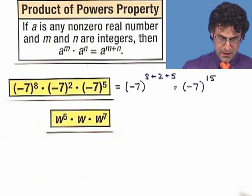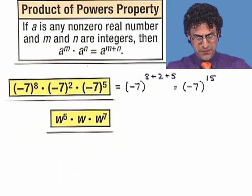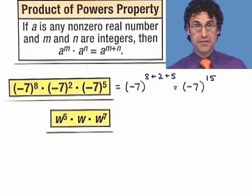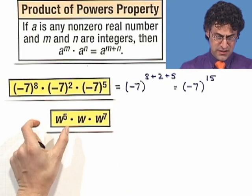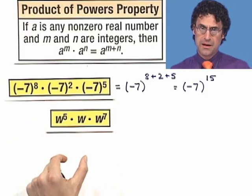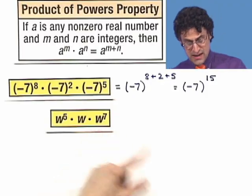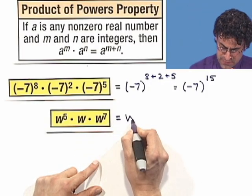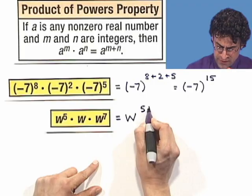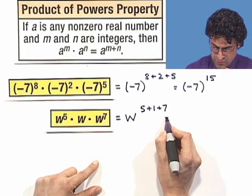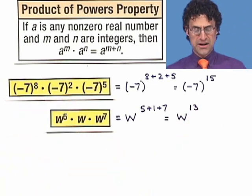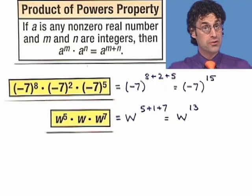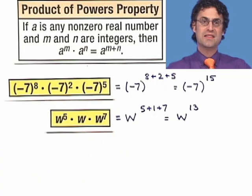What about w to the fifth times w times w to the seventh? We're multiplying all these numbers together and in each case the base is w. So: five plus one plus seven, which equals w to the thirteenth power. We can use the Product of Powers property correctly here because the bases are all the same and we're multiplying them together.